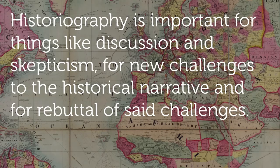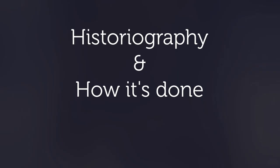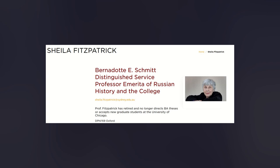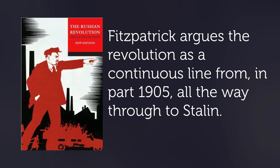Historiography is important for discussion and skepticism, for new challenges to the historical narrative, and for rebuttal of said challenges. That work had no real engagement, so we'll be moving to one with a more healthy discussion. Sheila Fitzpatrick is a respected Australian historian of Soviet life. In her book The Russian Revolution, she discusses the revolution but her particular lens differs from what one might consider typical — she broadens the scope, seeing the revolution as a continuous line from arguably 1905 all the way through to Stalin.